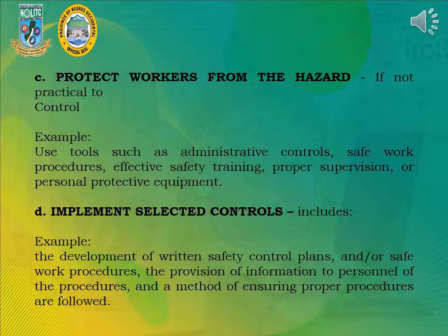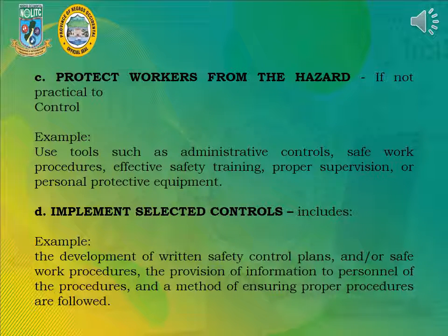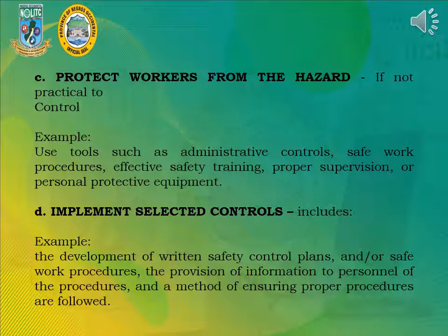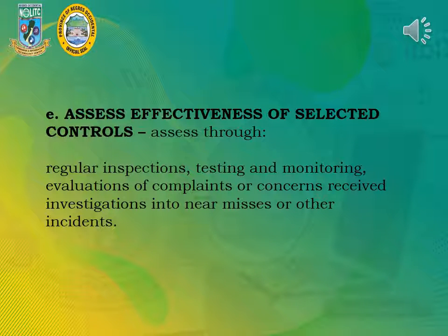C. Protect workers from the hazard if not practical to eliminate it. Use tools such as administrative controls, safe work procedures, effective safety training, proper supervision, or personal protective equipment. D. Implement selected controls — includes the development of written safety control plans and/or safe work procedures, the provision of information to personnel on the procedures, and a method of ensuring proper procedures are followed. E. Assess effectiveness of selected controls through regular inspections, testing and monitoring, evaluations of complaints or concerns received, and investigations into near misses or other incidents.